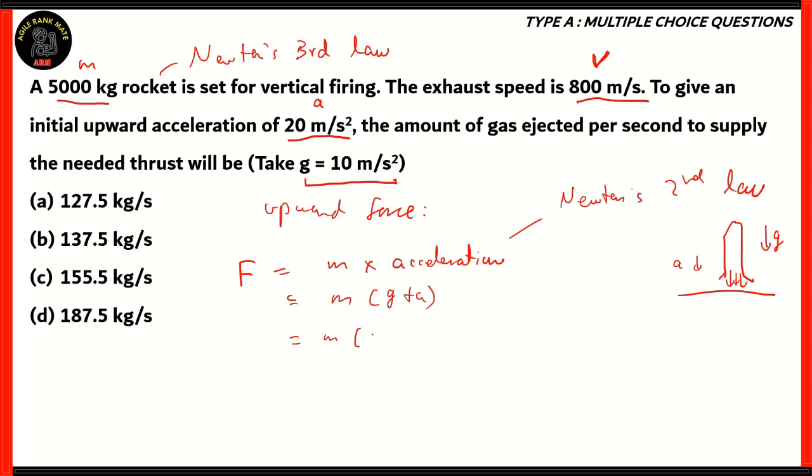So therefore, M times G plus A is 10 plus 20, and the mass is 5000 kilograms. So therefore, the value of force would be 5000 times 30, which will be 150,000 newtons. So the value of the upward force is 150,000 newtons.